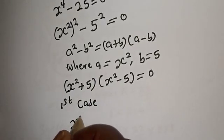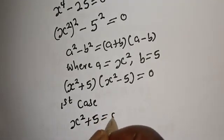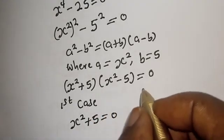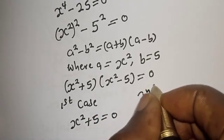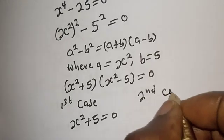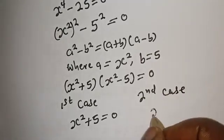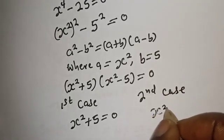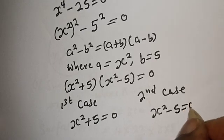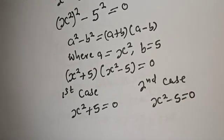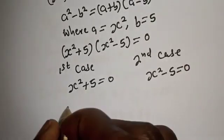First case: s squared plus 5 is equal to zero. And second case: s squared minus 5 is equal to zero. Let's work with the first case.